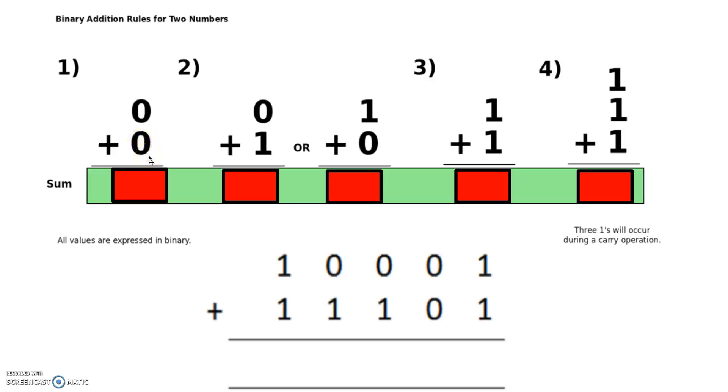So zero plus zero is of course zero. The second one is zero plus one. Now this is really easy because zero plus one is of course one.